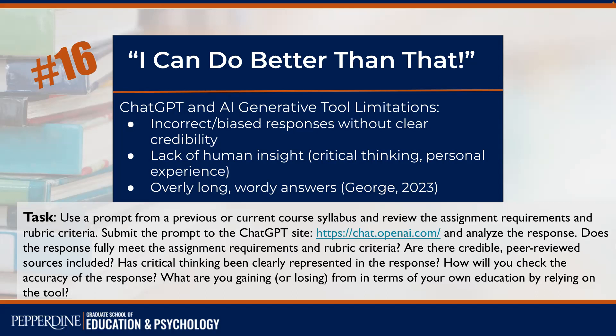There is a term called hallucinations, which refers to incorrect information that can be generated. There's also biased information — the creators of the technology and the text coming in can be biased. There's a lack of clear credibility; a lot of content comes from platforms like Reddit. There's also a lack of human insight, missing critical thinking, personal experience, and responses tend to be overly long, wordy, and redundant.